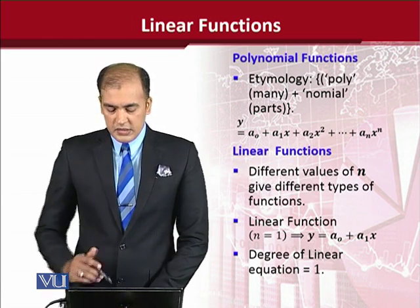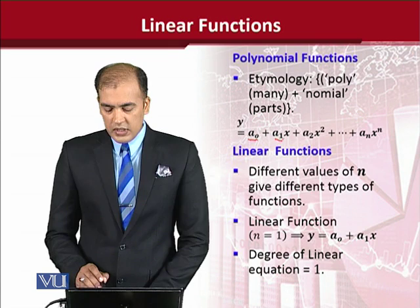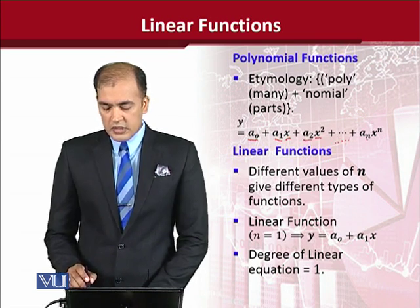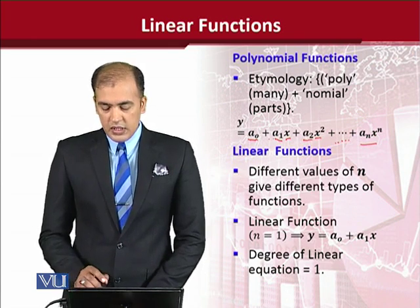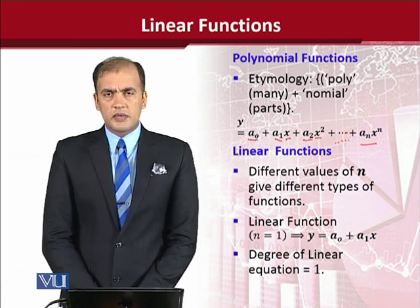In a functional form you can see we have written that y is equal to a0 plus a1x plus a2x squared and then continuing this process till an xn. So you see there are many parts, or in other words there are n parts of this polynomial function.